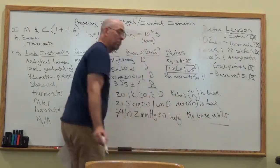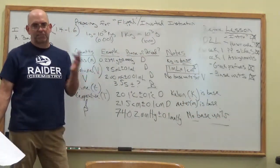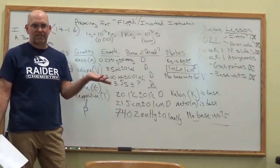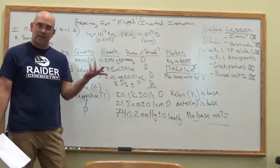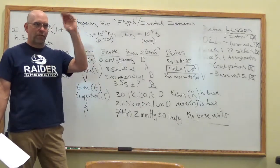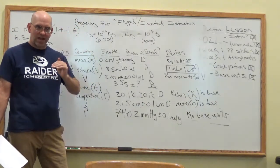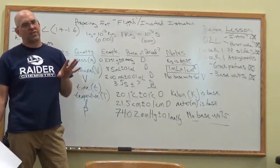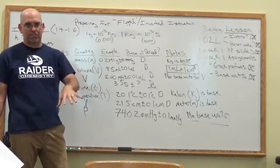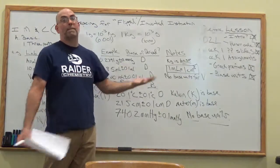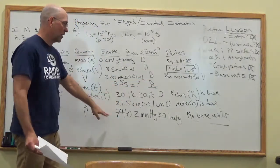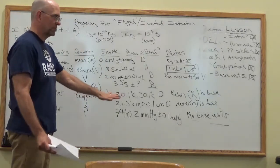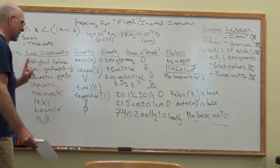There are no base units for pressure. For those who've had physics: pressure is force divided by area, and force is mass times acceleration — all of those things have base units. So you can break down pressure into a bunch of different base units. We have a standard unit for pressure — millimeters of mercury or atmospheres — but not a single base unit.